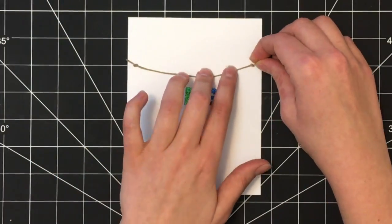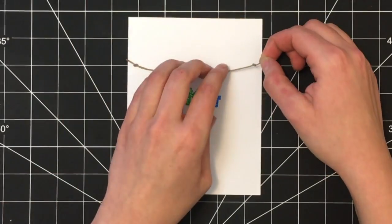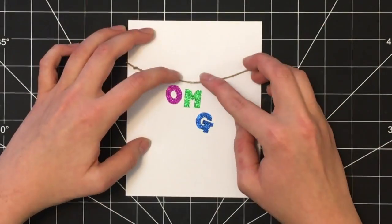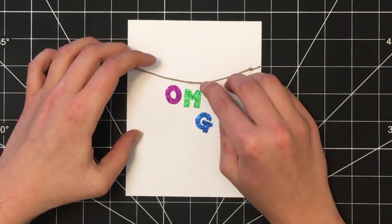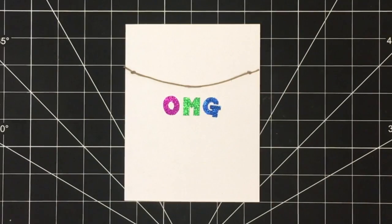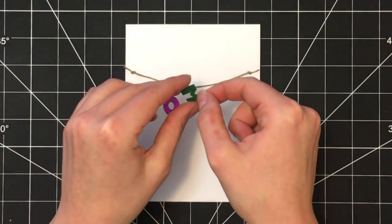I added a dot of glue on each end, and then a dot also in the middle. Here I'm using my favorite fast drying glue.